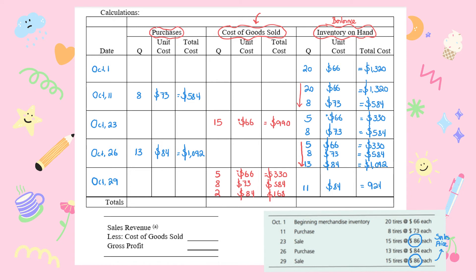Now let's find the totals. Total purchases: 8 + 13 = 21 units, total cost = $584 + $1,092 = $1,676. Cost of goods sold: total units sold = 30, total COGS = $990 + $330 + $584 + $168 = $2,072. The ending balance is 11 units at $84 = $924. The October 1st entry is the beginning balance and $924 is the ending balance.